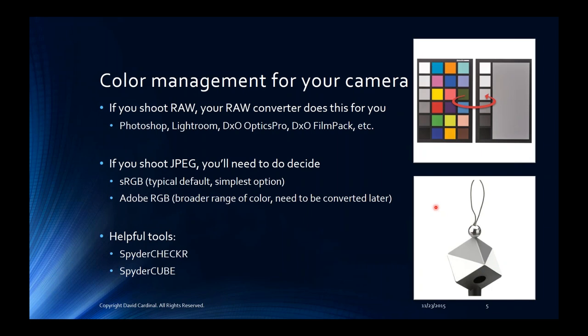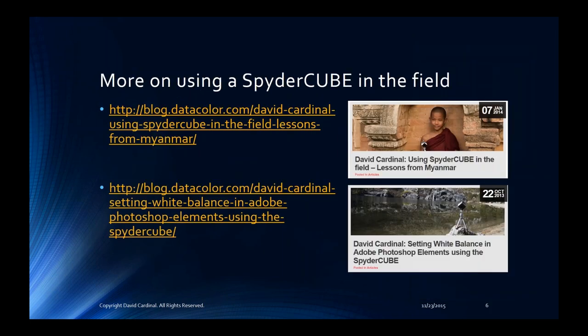The SpiderCube is a clever little device — about the size of a golf ball — that you can put in a scene to get a sense of what the primary light source is. You get gray balance on your light and shady sides, a white level setting, a dark black setting, a black hole setting, and a specular reflection. When you go into your image processing application, you get a lot of data from it. I've used the SpiderCube in the field a lot and written about how to do it — it's a great tool.